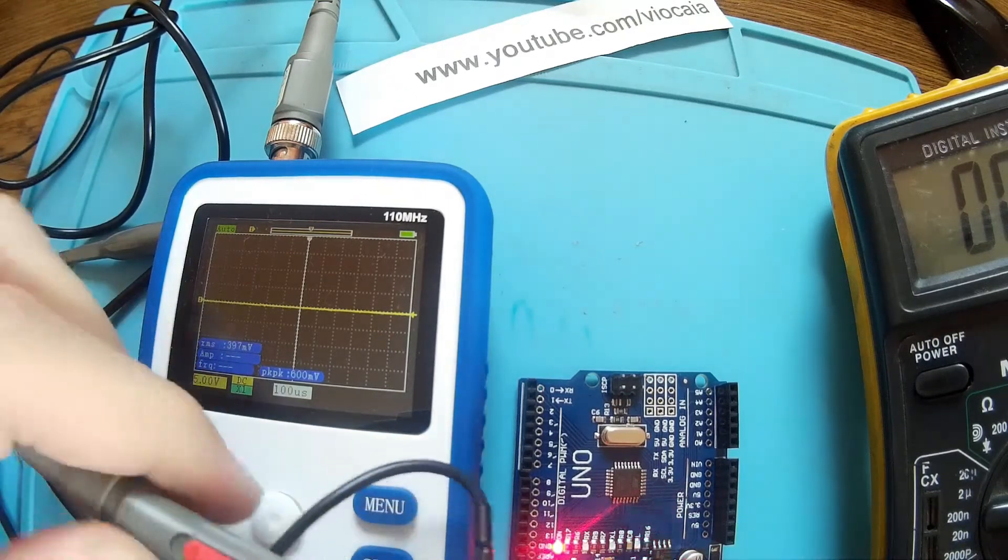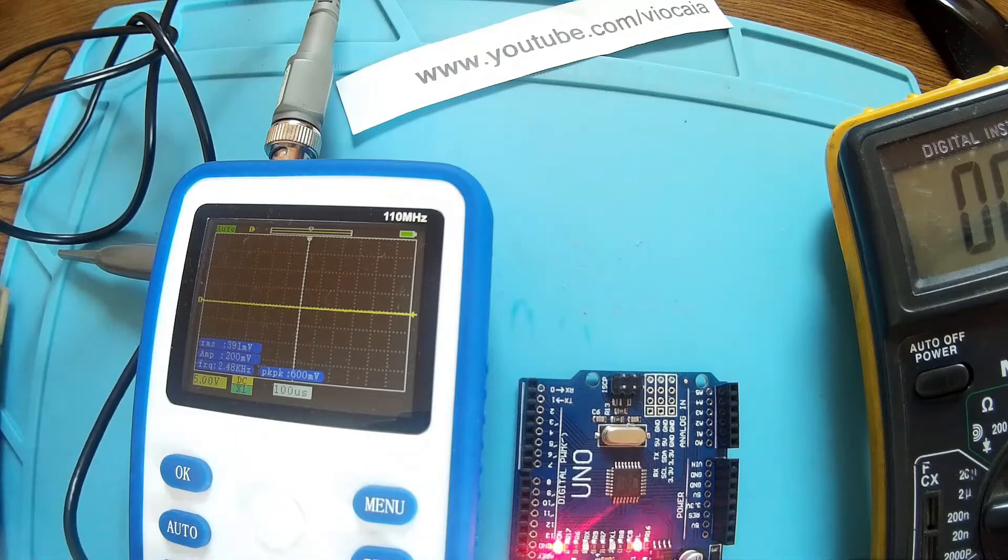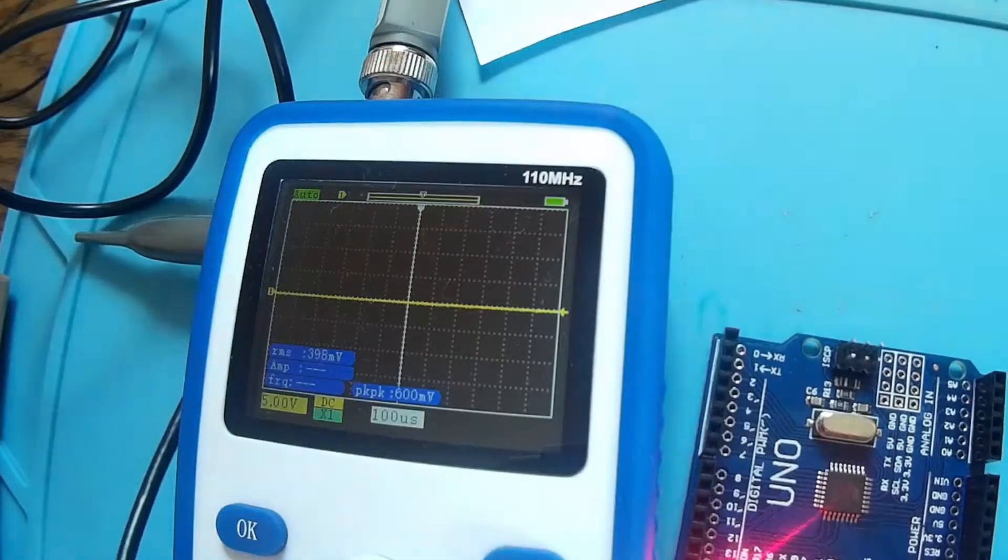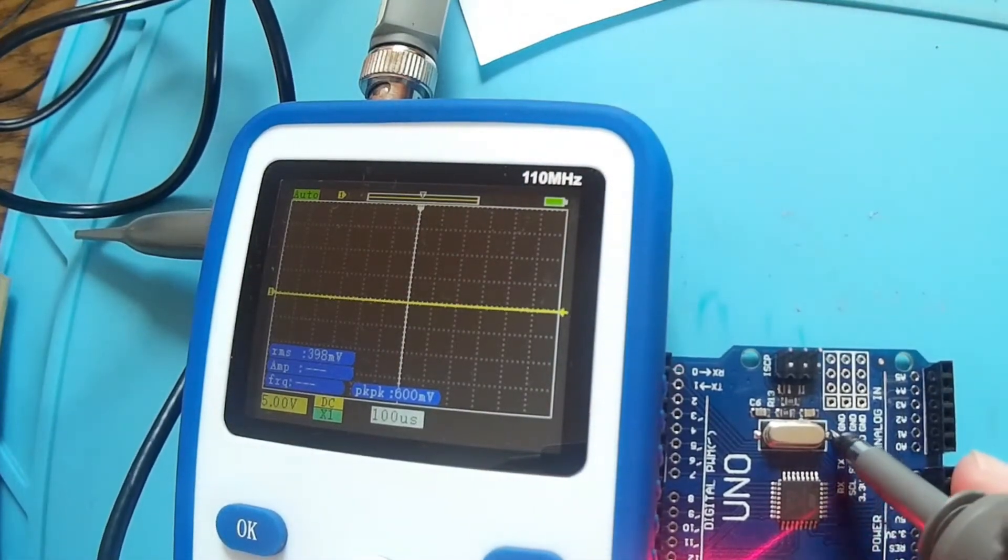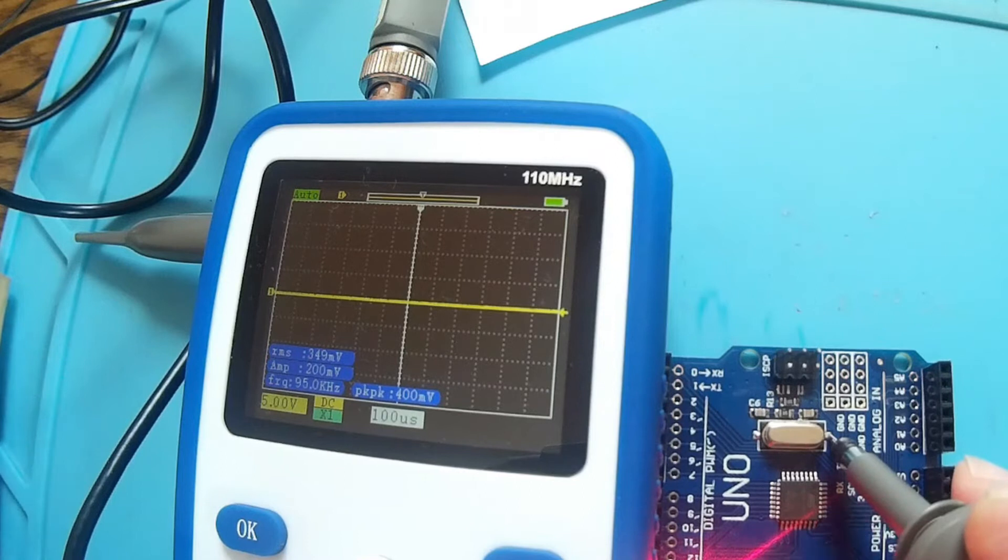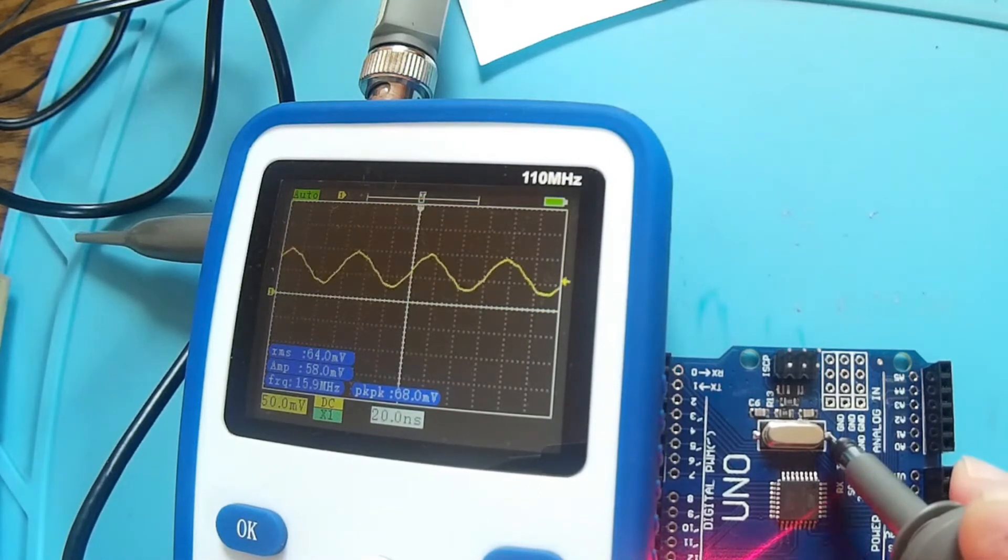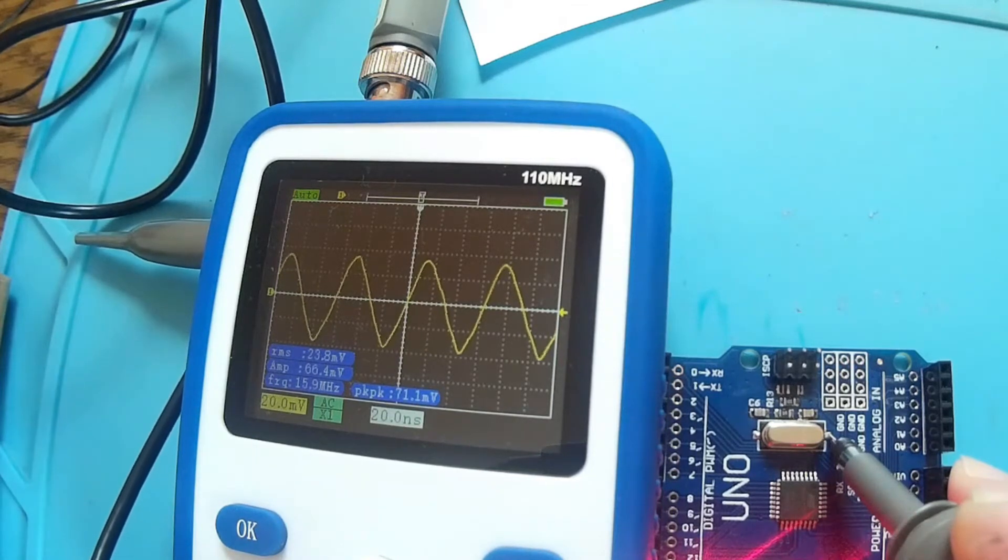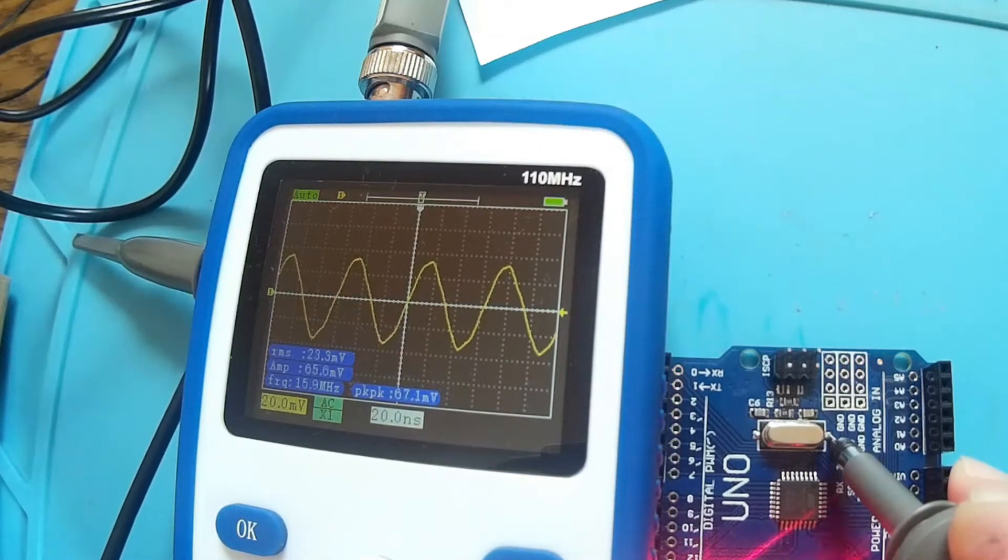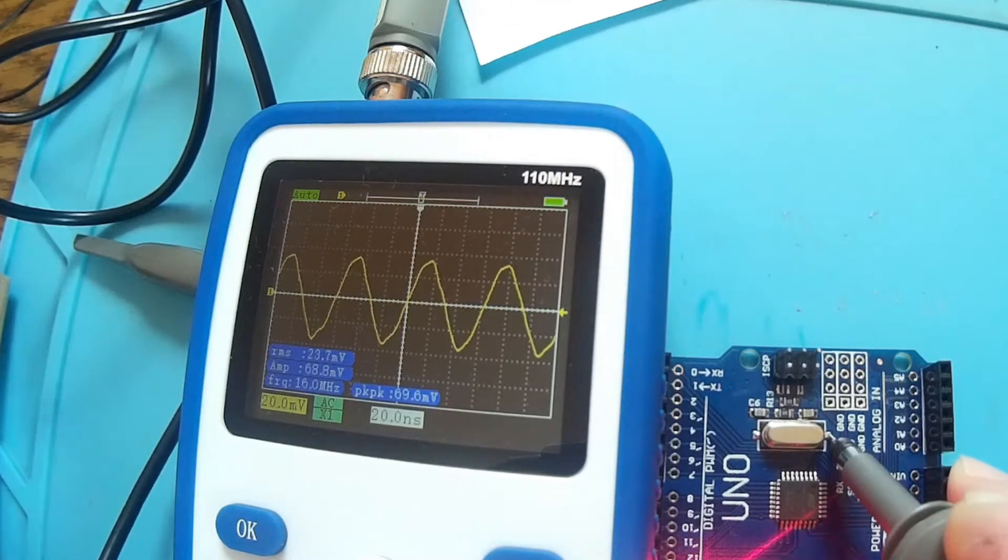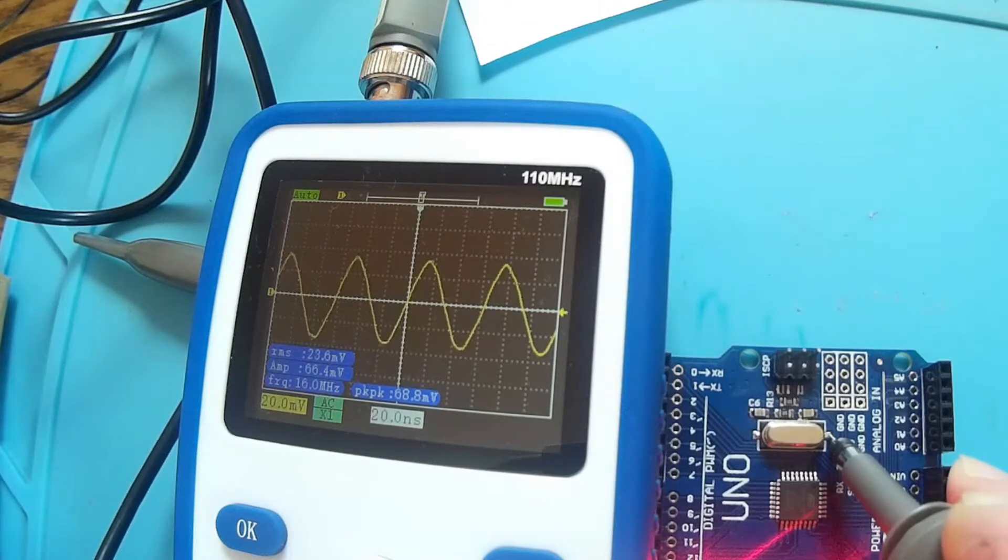The probe goes on 10x. Let me have a ground here somewhere. Okay, so we have a clear ground over there. Now let me see the oscillator. This is a 16 megahertz crystal. We put it on auto and there we are, AC of course. Beautiful, 16 megahertz and it's going very nice.